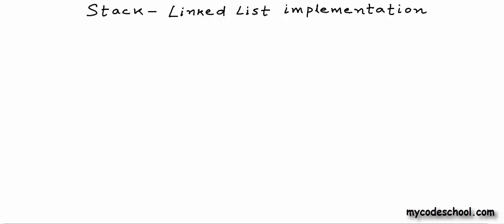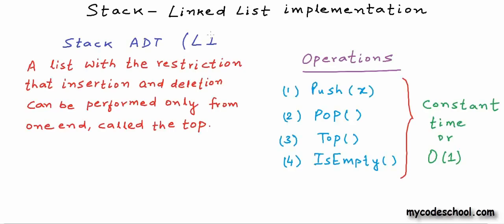For this lesson, I'm assuming that you already know about both stack as well as linked list. Stack, as we know from our discussion so far, is called a last in first out data structure. Whatever goes in last in a stack comes out first. It's a list with the restriction that insertion and deletion must be performed only from one end that we call the top of stack. An insertion in a stack is called push operation and deletion is called pop.